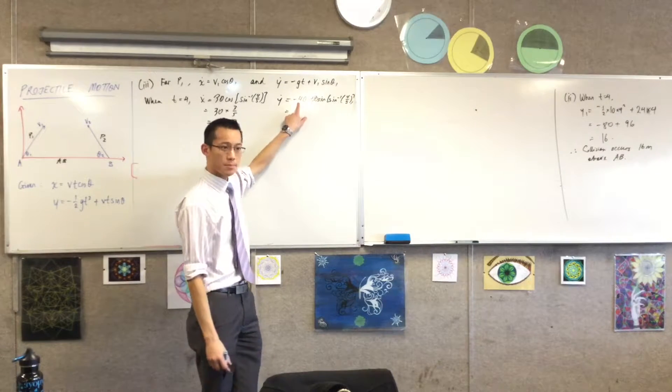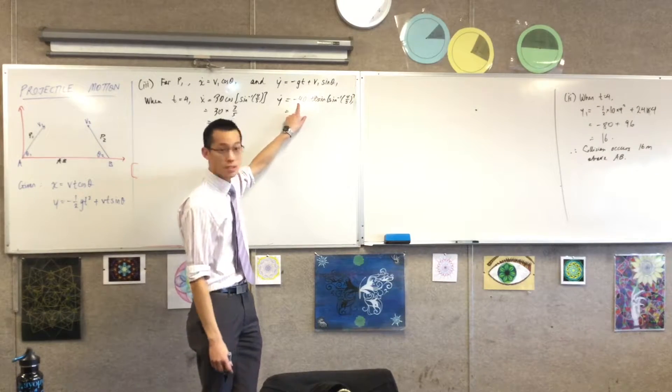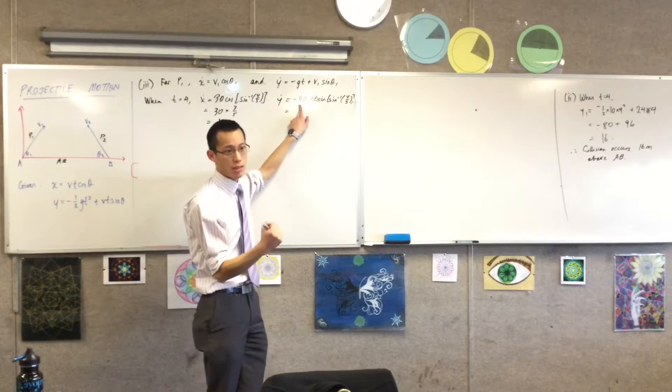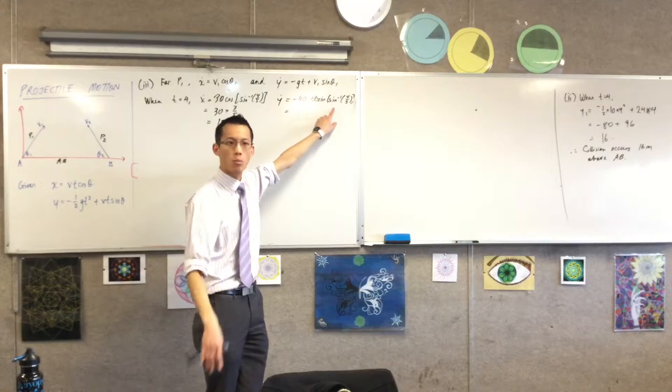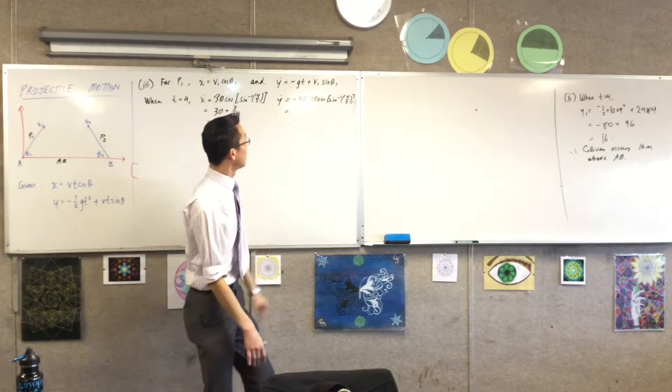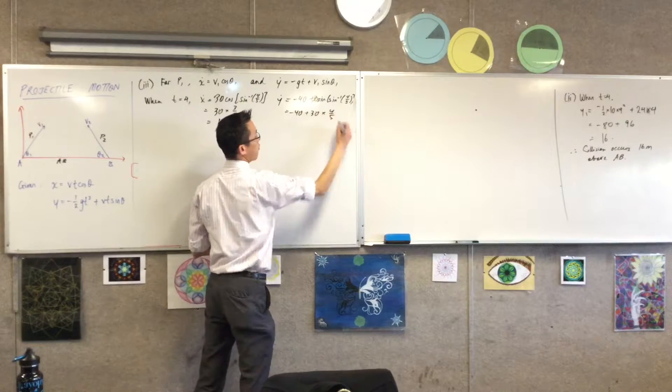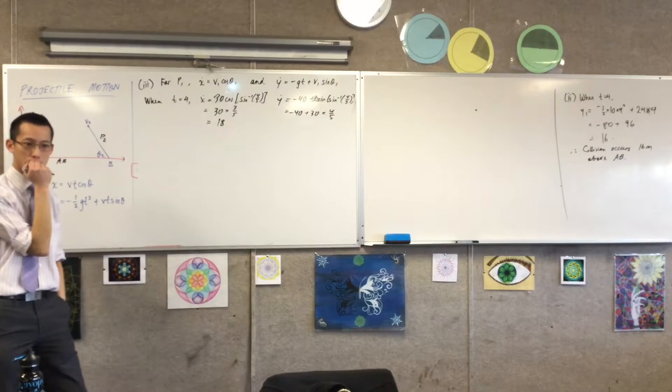What does this represent? Because this is the same, this is gravity, this is the longer you've been flying, the more it's pulling you down, right? And eventually it's going to overcome, whatever this happened to be, okay? Let's work it out. When you've got minus 40 plus 30 times 4 fifths, 30 times 4 fifths is...